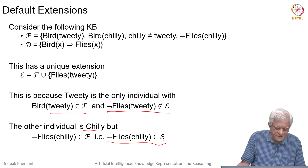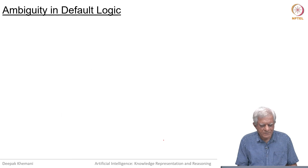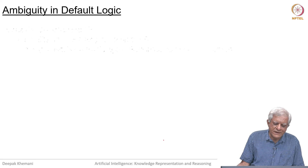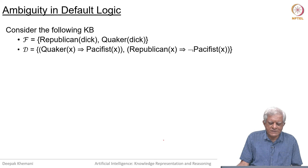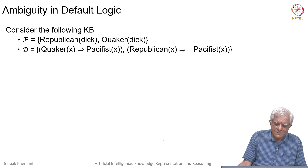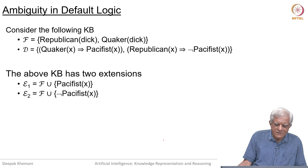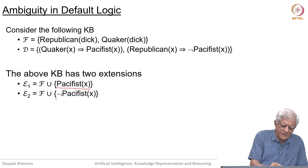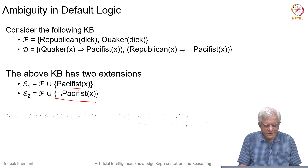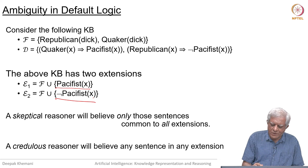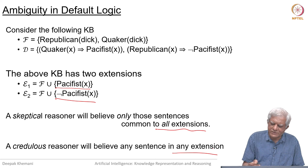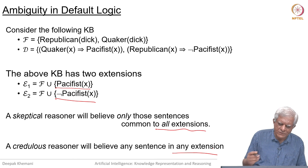This example has a unique extension, but we can also have ambiguity in default logic, as we had seen earlier when looking at taxonomies. The same example applies here: the first-order theory talks about Republicans and Quakers, and the default rules say Quakers are pacifist and Republicans are not pacifist. Then the knowledge base has two extensions — one in which Dick is a pacifist and one in which he is not. A skeptical reasoner will believe only something common to all extensions, while a credulous reasoner would believe a sentence if it is in any extension.